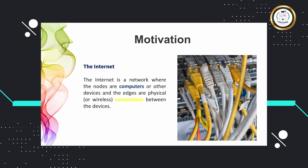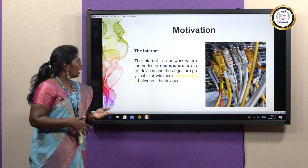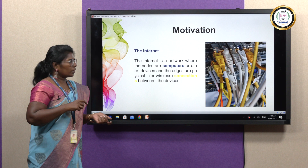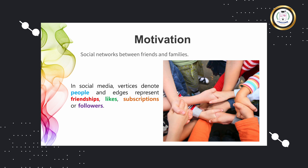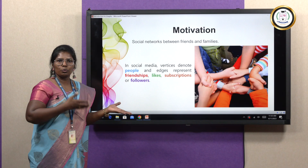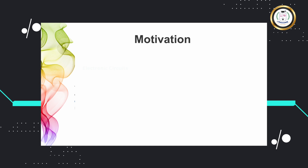The internet is a network where we can see computers connected as nodes, and if two computers are connected, we can have an edge between them, where computers or other devices are nodes. Another example is social networks between friends and families, where the vertices denote people, and if two people are friends or follow each other, they can be represented by an edge. Electronic circuits can also be thought of as a graph or a network.